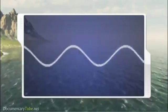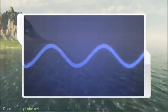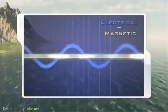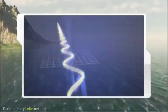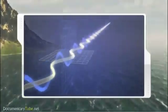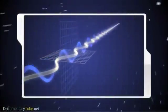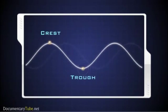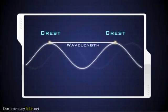EM waves are produced by the vibration of charged particles and have electrical and magnetic properties. But unlike ocean waves that require water, EM waves travel through the vacuum of space at the constant speed of light. EM waves have crests and troughs like ocean waves; the distance between crests is the wavelength.